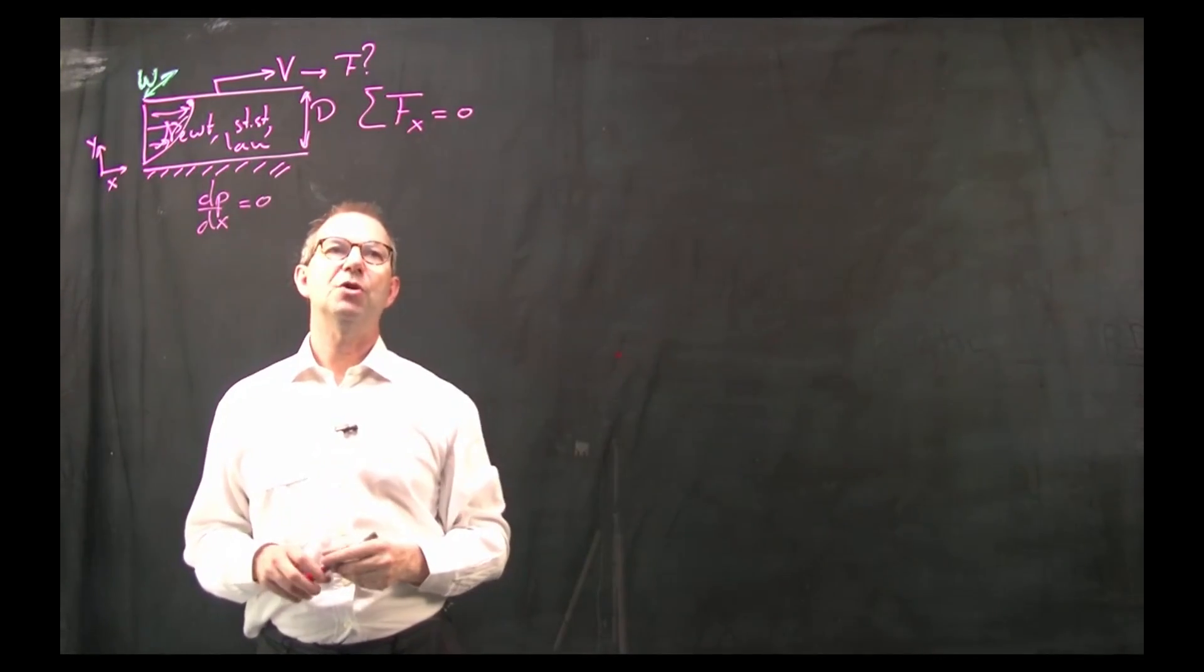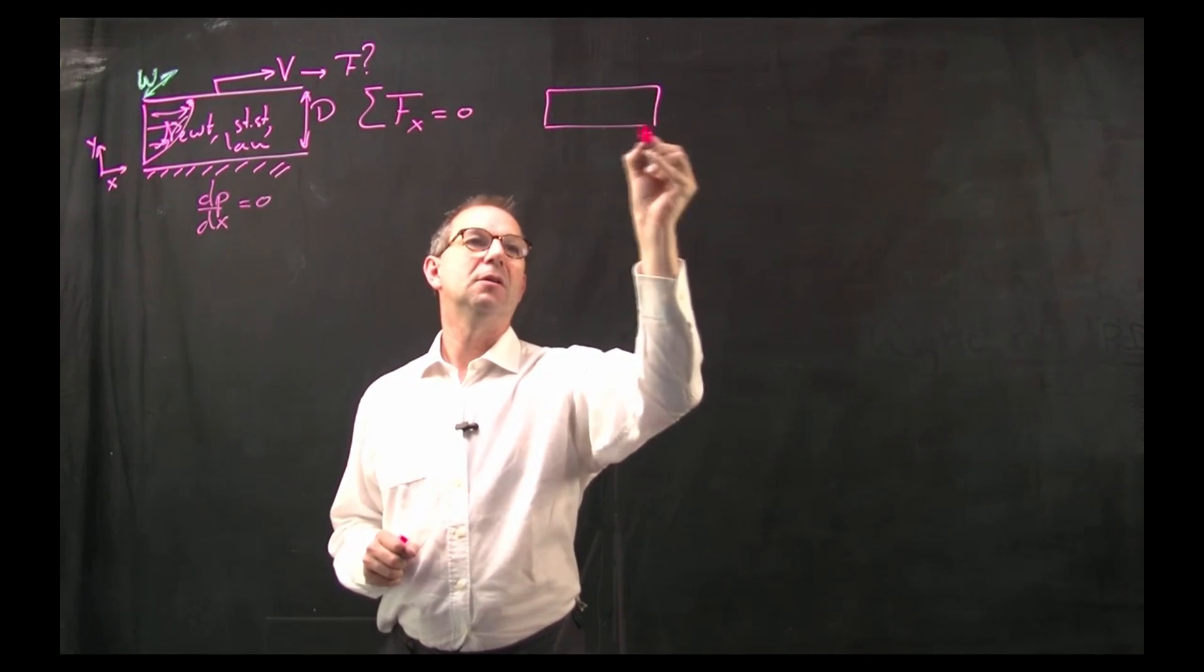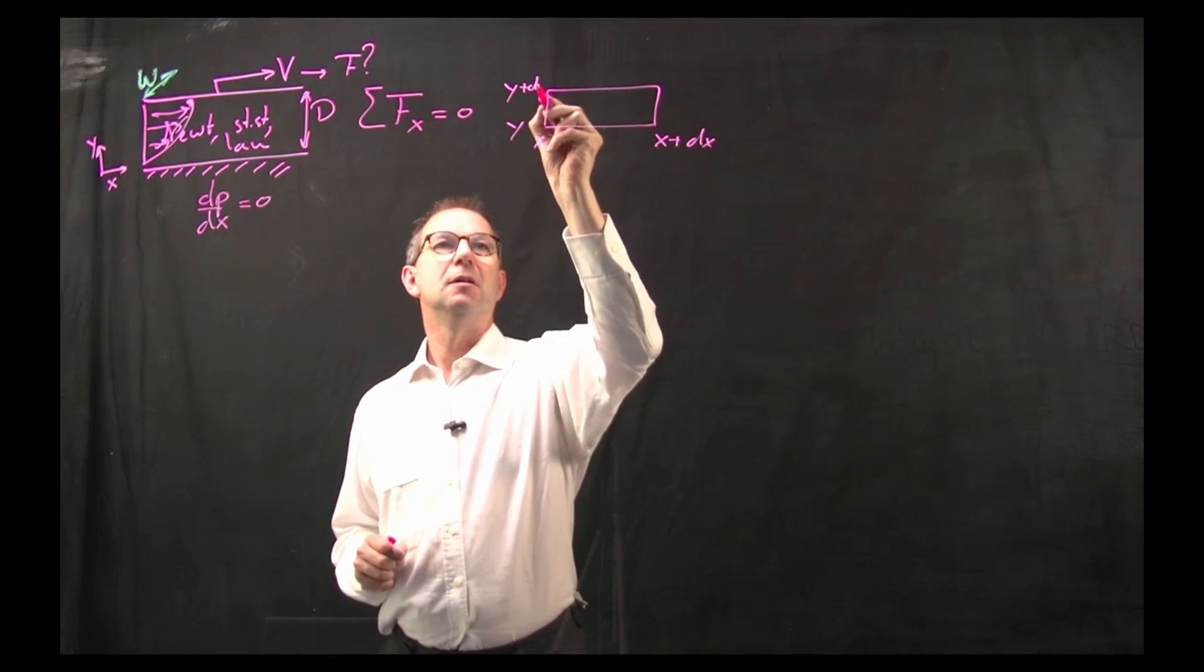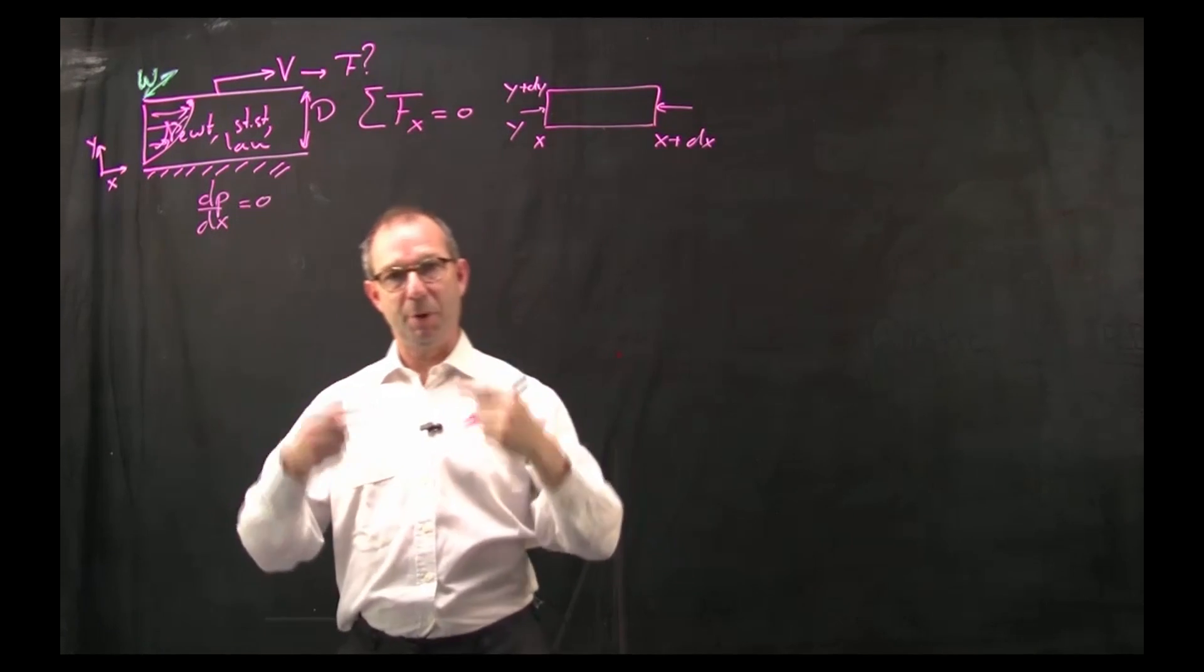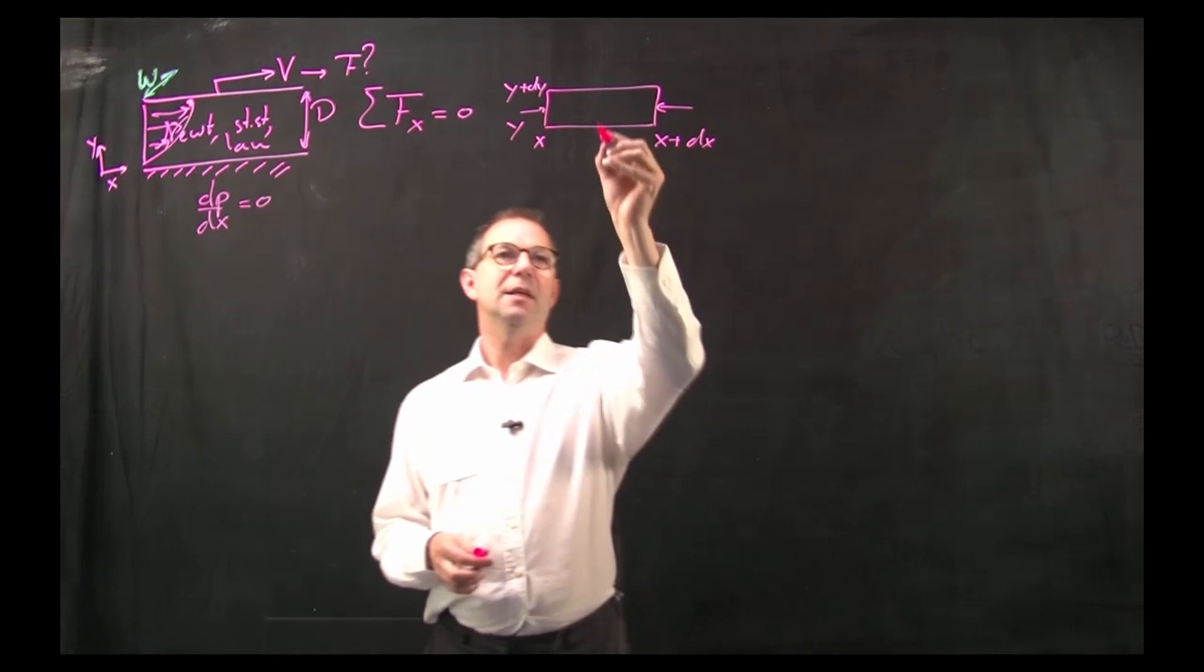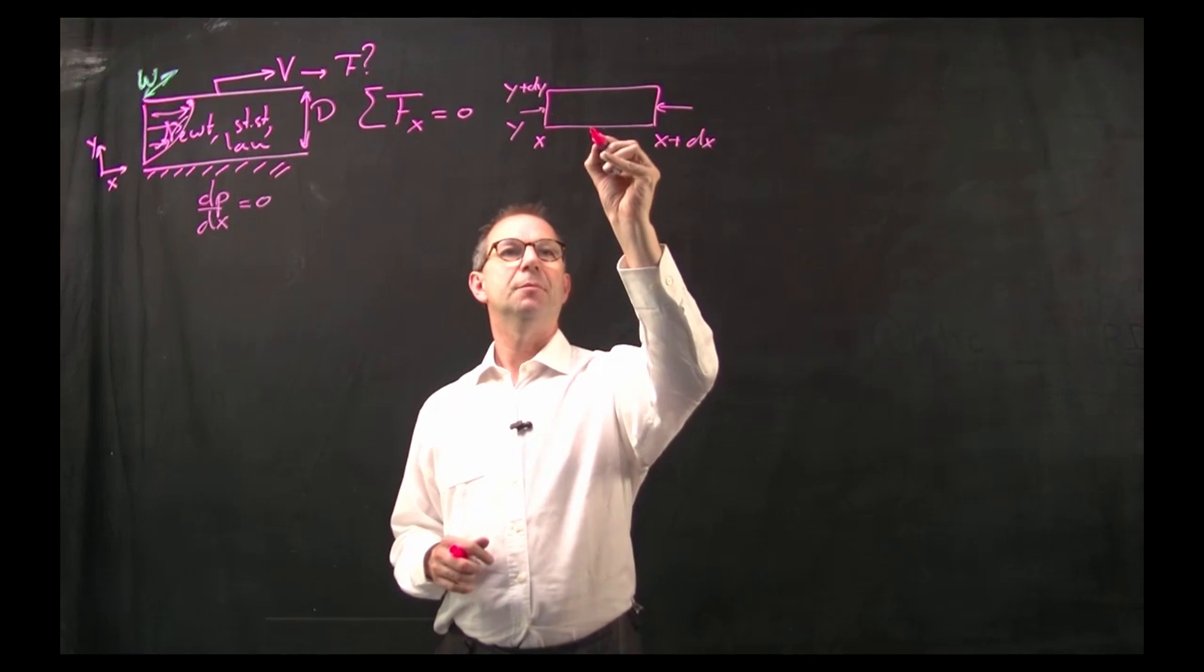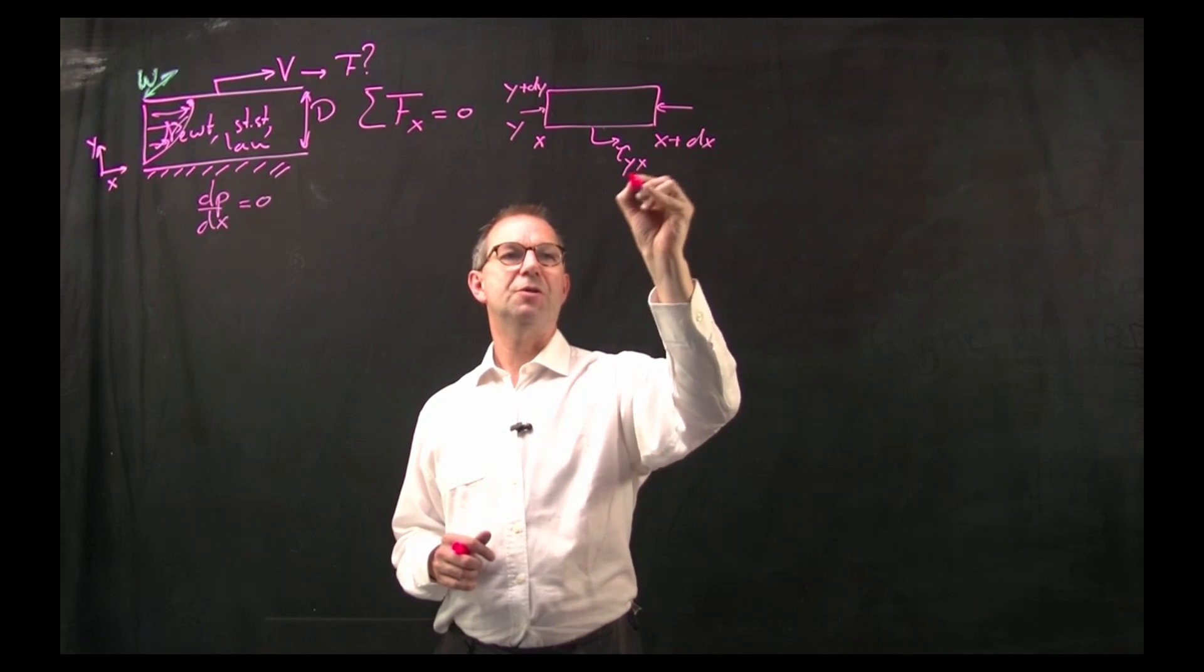If I do the sum of forces in the x direction and I set up a balance over this small part out of the fluid. The two pressures that will be pressure forces but they are completely identical or opposite. So that will give a zero. Then there is gravity in that direction but it doesn't matter because it's a balance that I make in the horizontal direction. But there are friction factors or shear stresses.